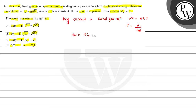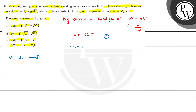From the question, U equals alpha root V, and this U equals the internal energy of the ideal gas. We can equate this with equation 1, so nCvT equals alpha root V.